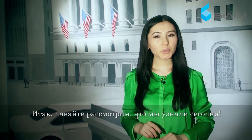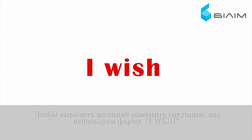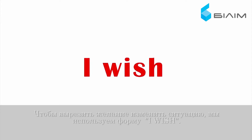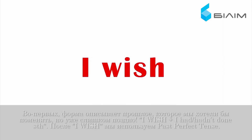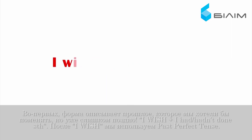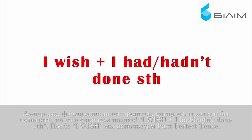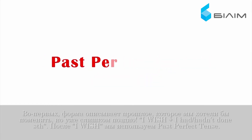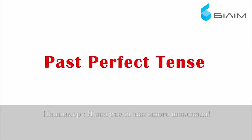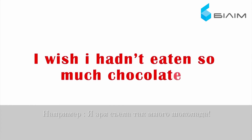Let's review what we have learned today. To talk about our desire to change the situation, we can use the expression 'I wish.' First, it may refer to the past that we would like to change, but it's too late: I wish plus I had or hadn't done something. After 'I wish' we use the past perfect tense. For example: I wish I hadn't eaten so much chocolate.